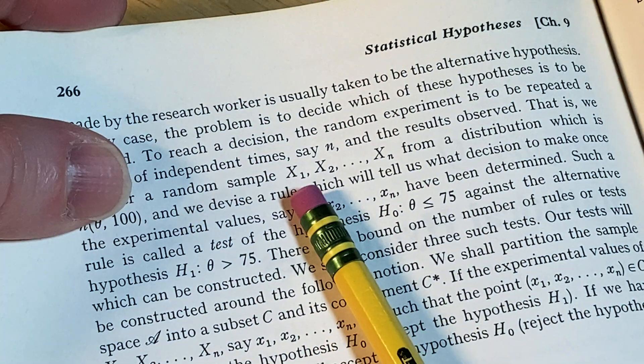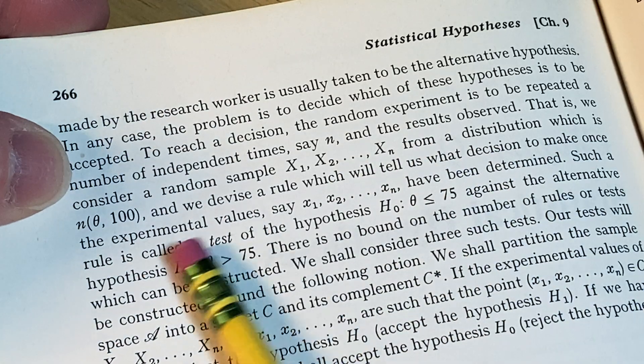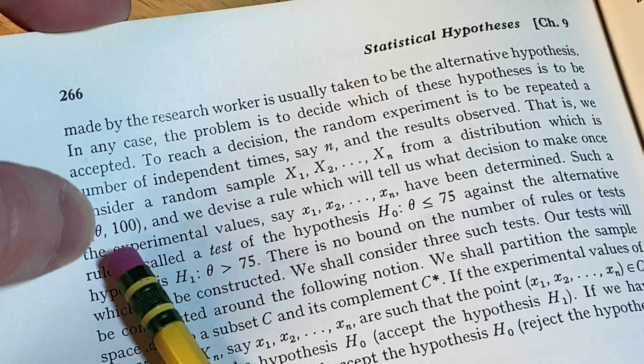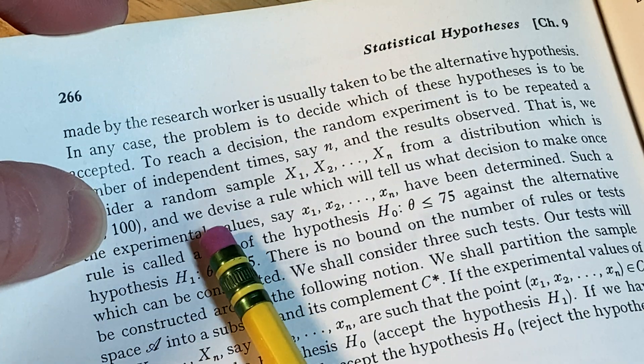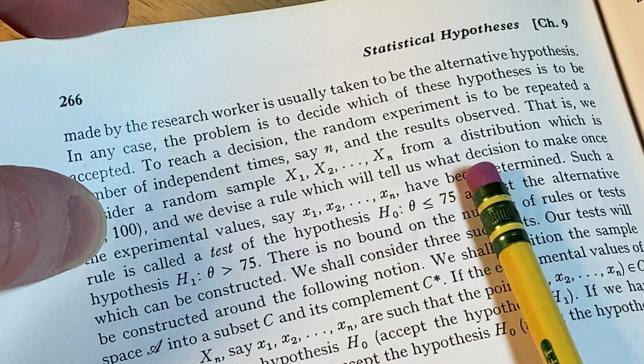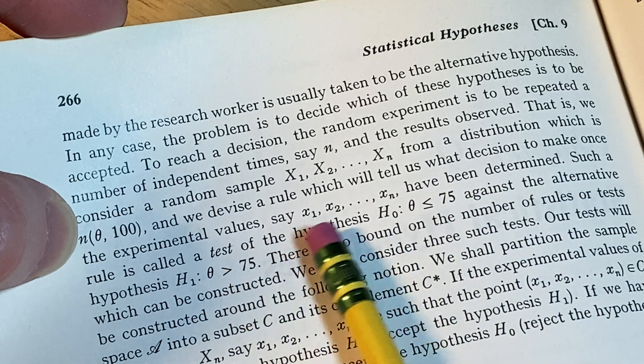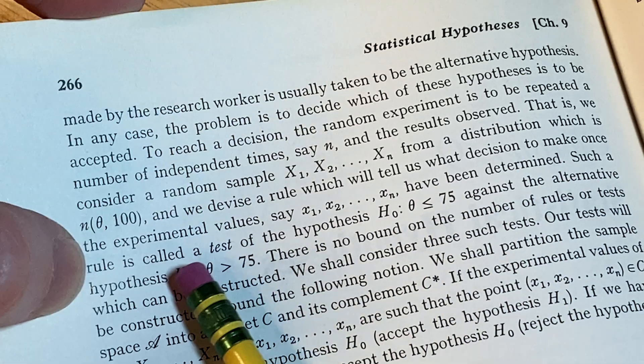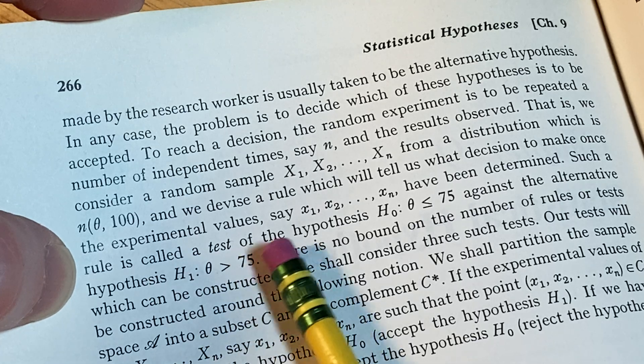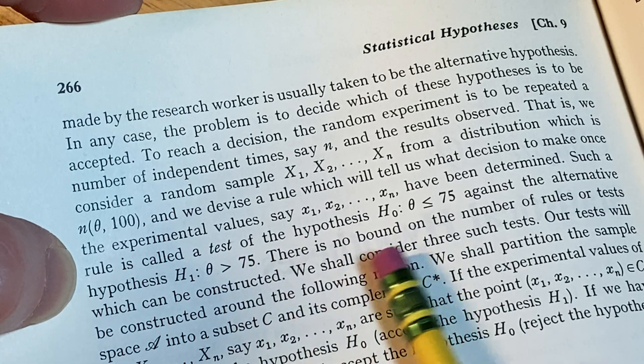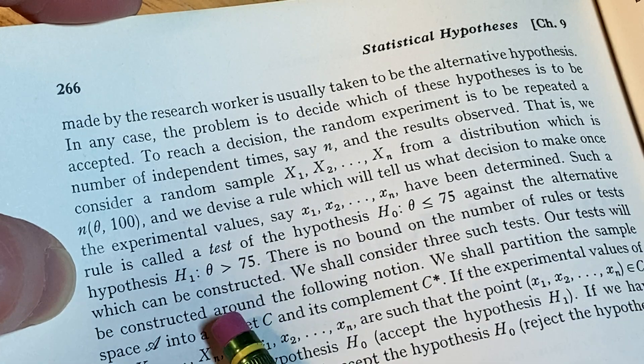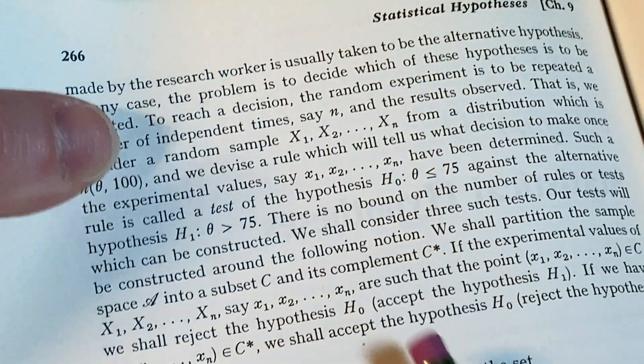That is, we consider a random sample, say x₁ through xₙ from a distribution which is normal with mean θ and variance 100, and we devise a rule which will tell us what decision to make once the experimental values have been determined. Such a rule is called a test of hypotheses against the alternative. There is no bound on the number of rules or tests which can be constructed, and it goes on.